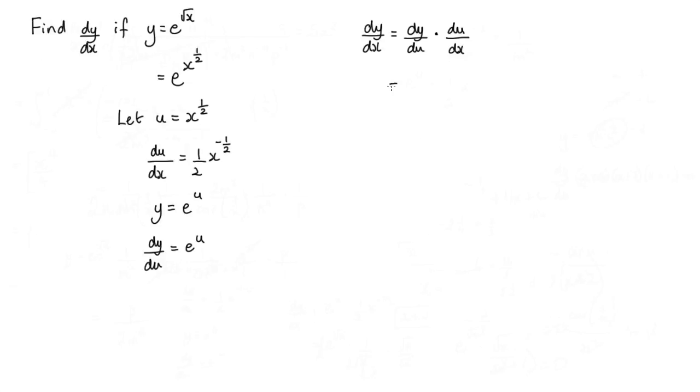So that is equal to, well dy/du, that is e to the power of u, multiplied by du/dx, and du/dx is this term here. So we've got a half, x to the negative half.